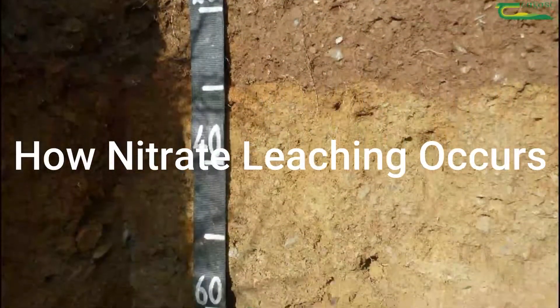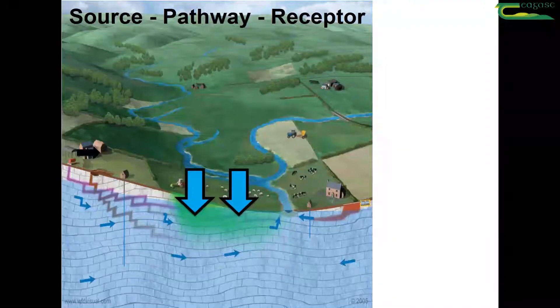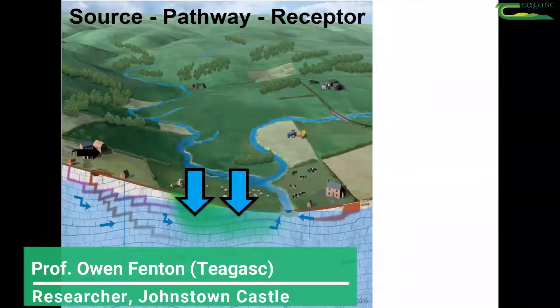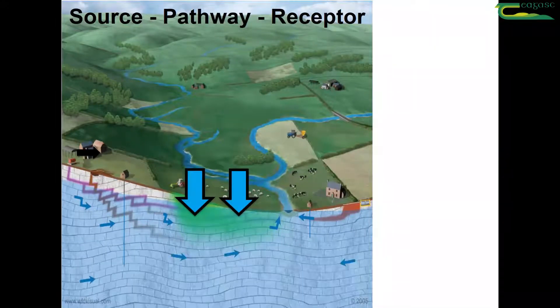There's a concept of source — where are the nutrients coming from — pathway, where do they travel, and then what's the impact: where do these nutrients eventually end up.